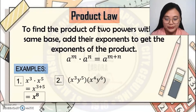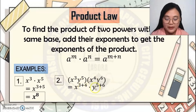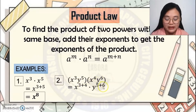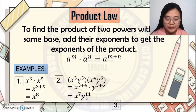Second example: x cubed times x to the 4th, times y to the 5th times y to the 6th. Add the exponents for x: 3 plus 4. Add the two exponents for y: 5 plus 6. Simplify — the final answer is x to the 7th, y to the 11th.